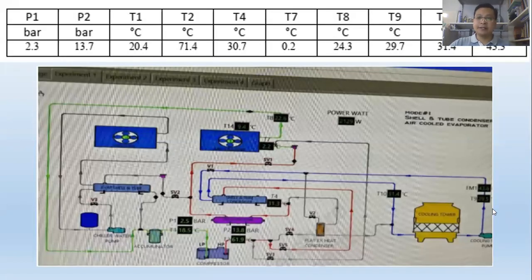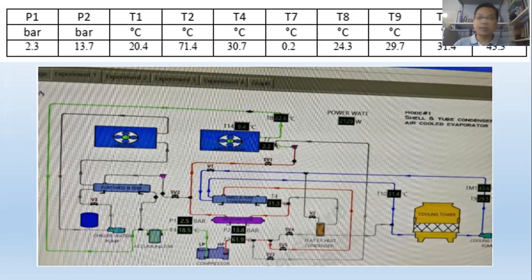I would like to explain how to get the data from the experiment in the fifth laboratory work. As we know, we try to run the experiment and then we collect the data. What we can collect: pressure initial, we can get from the computer system in the experiment, and then P2, and then T1, T2, T4, T3, T7, T8, T9, T10.